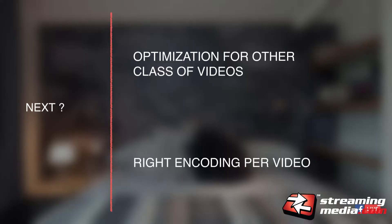The next steps here are: can we use similar approaches to optimize other classes of videos? And can we pick the right encoding setting for every individual video — applying the full learnings from our VOD pipeline to live — to make sure data compresses well, video looks good, we have fewer stalls, and we continue to support the many devices people watch videos on Facebook on?